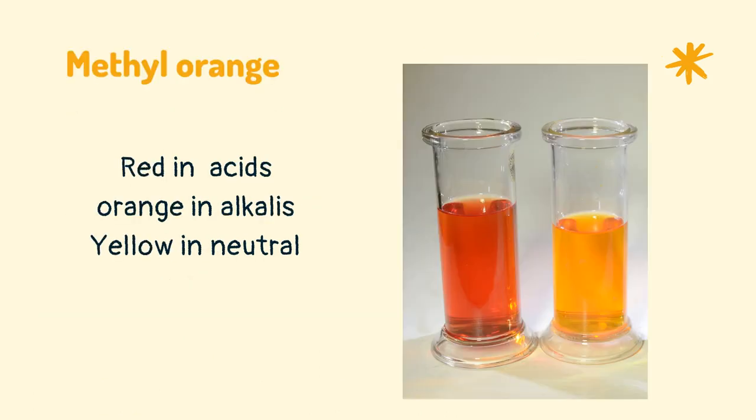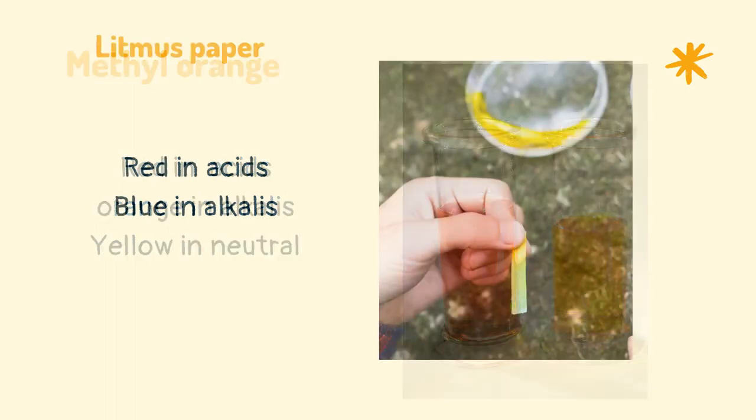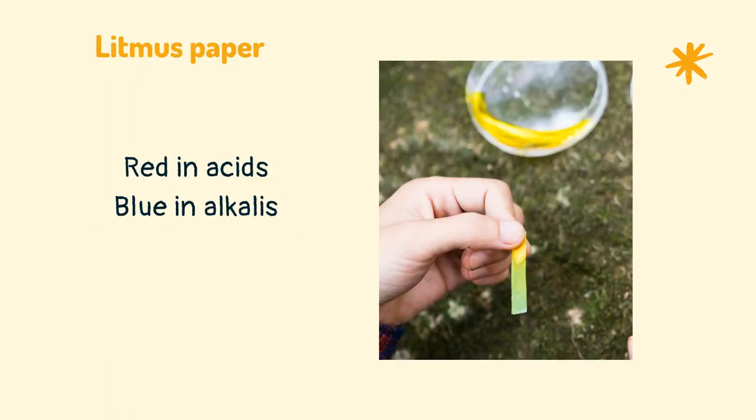Methyl orange turns red in acids, orange in alkalis, and yellow in neutral. Litmus paper turns red in acids and blue in alkalis.